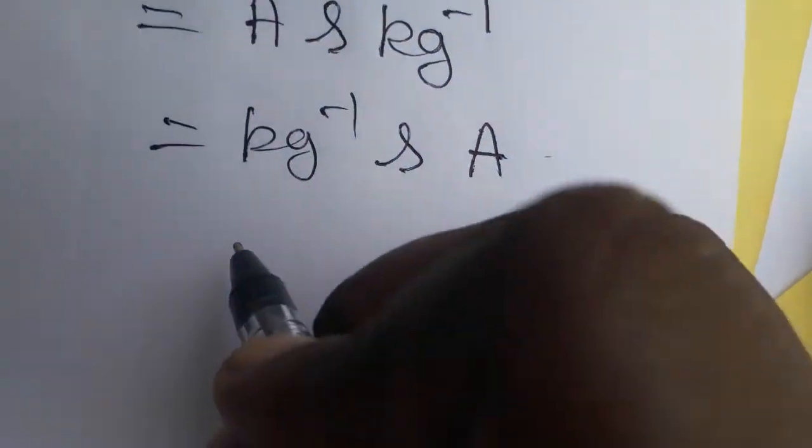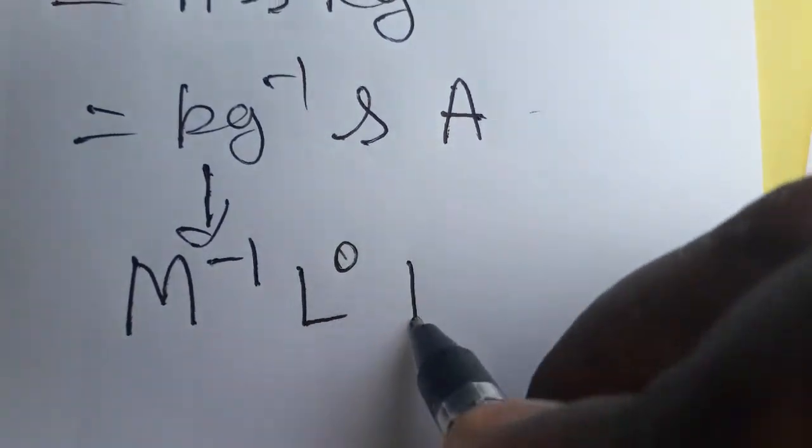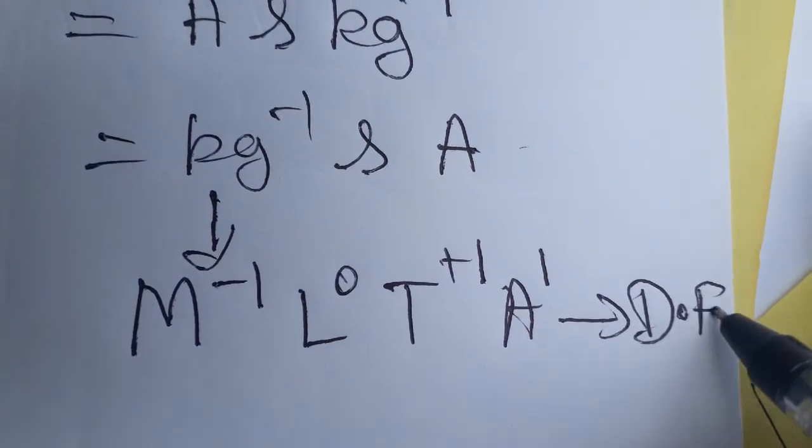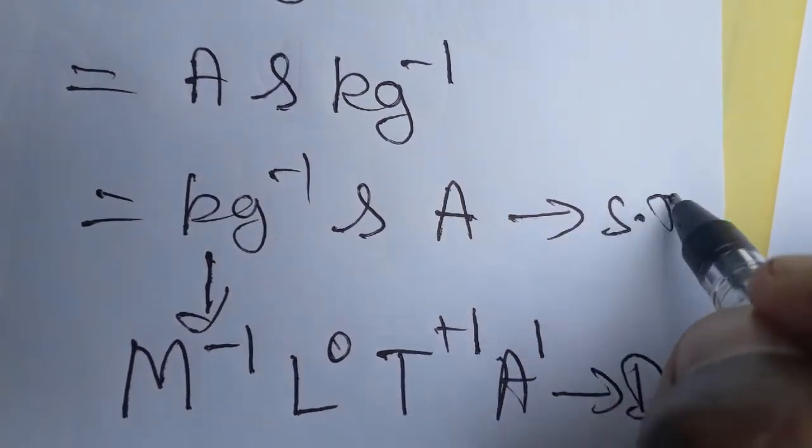Now I am going to change to the dimensional formula: for mass M⁻¹, L is not there, T is power 1, ampere is I¹. So we got the dimensional formula and SI unit. Thank you.